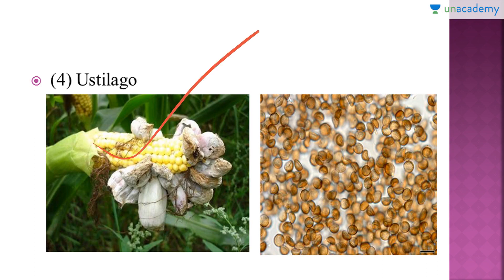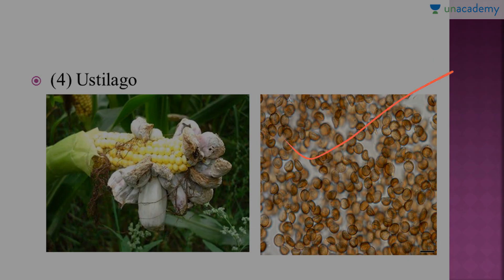Here you can see the image of Ustilago, the smut fungi, and how it has damaged the corn plant. Here is the microscopic structure of it. Haplontic life cycle means the photosynthetic phase or the dominant phase is the gametophyte, which is N. Hence such a life cycle is called haplontic. There are two more types: diplontic and haplodiplontic. In diplontic, the dominant phase is the sporophyte which is 2N. Some gymnosperms and angiosperms have this life cycle. Fucus also has a diplontic life cycle in spite of being an algae — it is an exception.